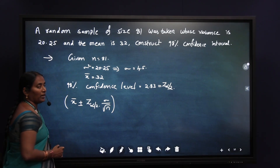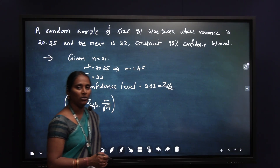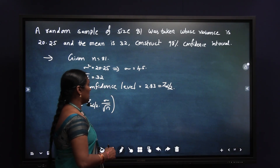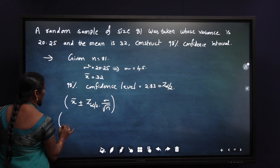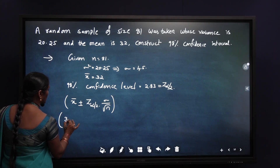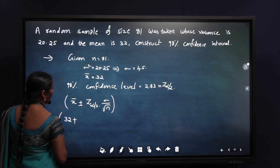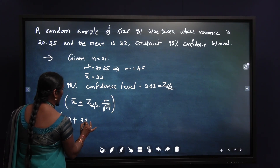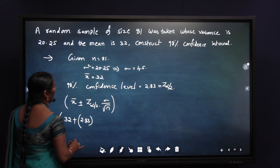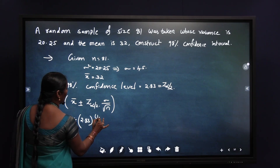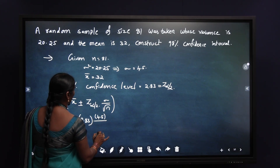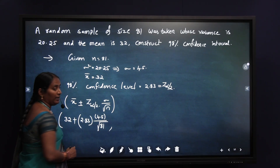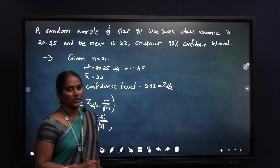We have only a single mean. The formula for single mean is x bar plus or minus z alpha by 2 into sigma by root n. It means we are going to find out one positive value and one negative value for the concerned problem. Now we are going to substitute the values. The x bar value is 32, plus the value of z alpha by 2, which is 2.83, into sigma, whose value is 4.5, divided by root n, which is root of 81.